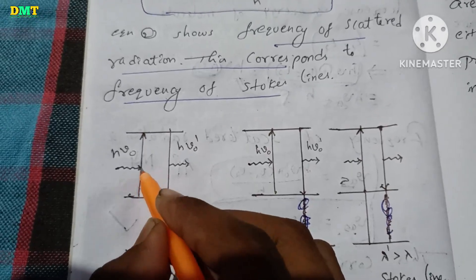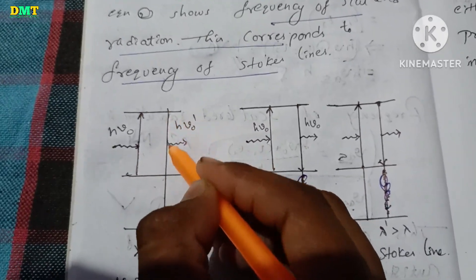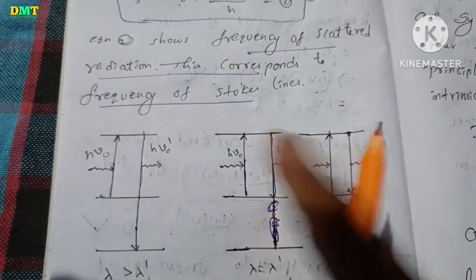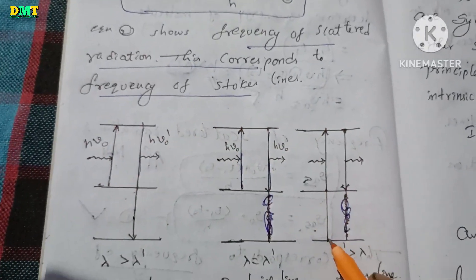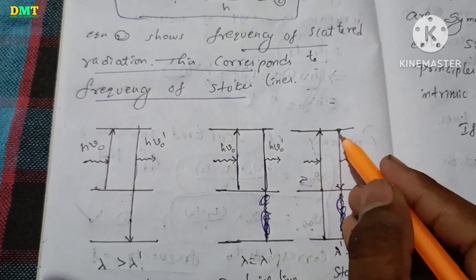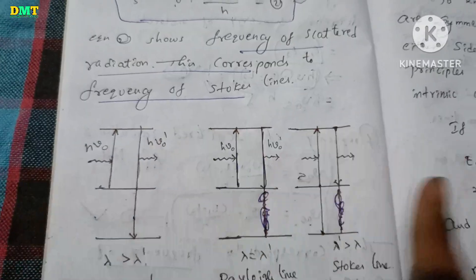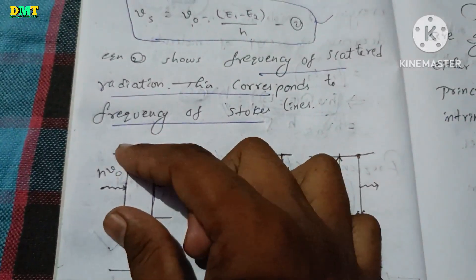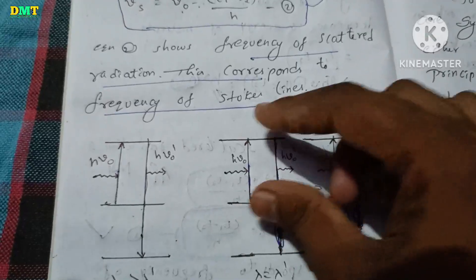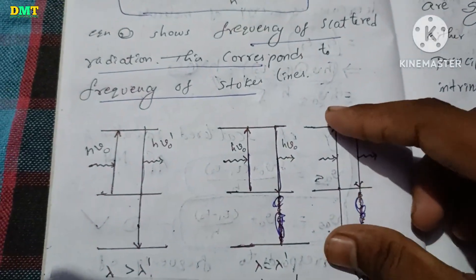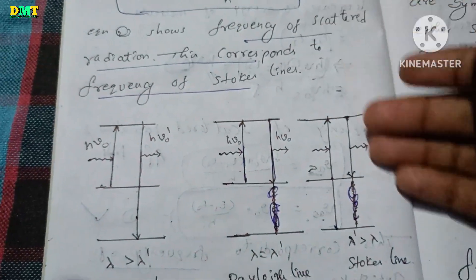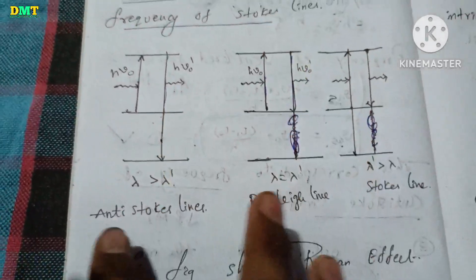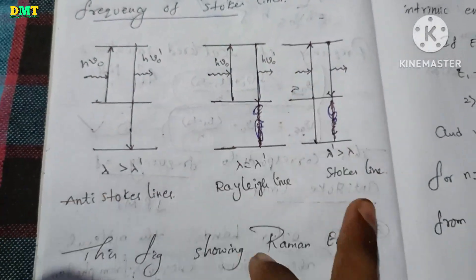Looking at the diagram, the incident line is in the centre. There are three cases: the incident line in the middle, and two scattered lines on either side. The first case gives the anti-Stokes line and the other case gives the Stokes line.